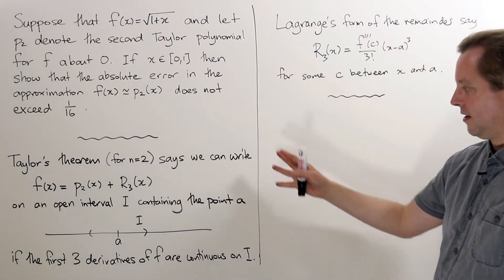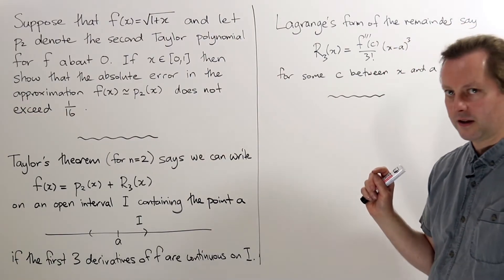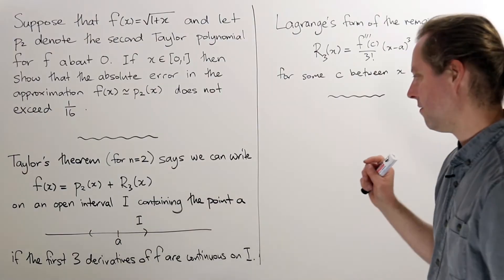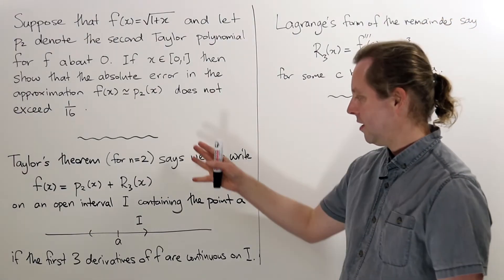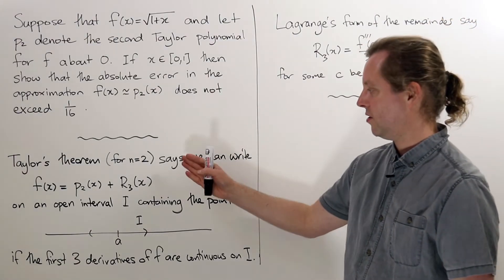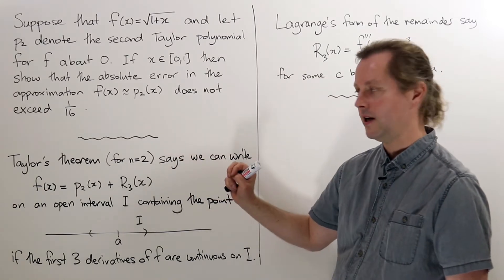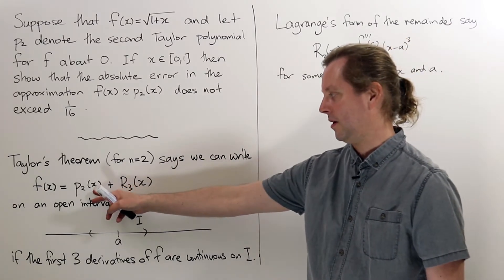So first of all, I'll just remind you what Taylor's theorem says and how it's relevant here, or at least a cut down version of Taylor's theorem. We're just going to do it for the n equals 2 case because we want to approximate f with p2.